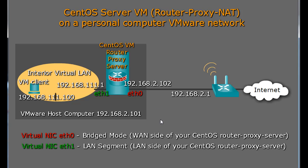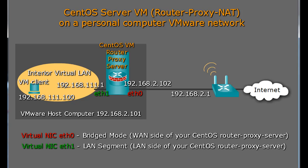We can set this up using VMware Player with two virtual machines — one for our CentOS router proxy server, and another as a client on the internal network. Ethernet 0 needs to be in bridged mode so it picks up an IP address from the wireless router, and Ethernet 1 needs to be set to a LAN segment in VMware Player, creating a private network on the inside of the CentOS router proxy server. I'm also going to discuss how we did this differently in the college computer lab.